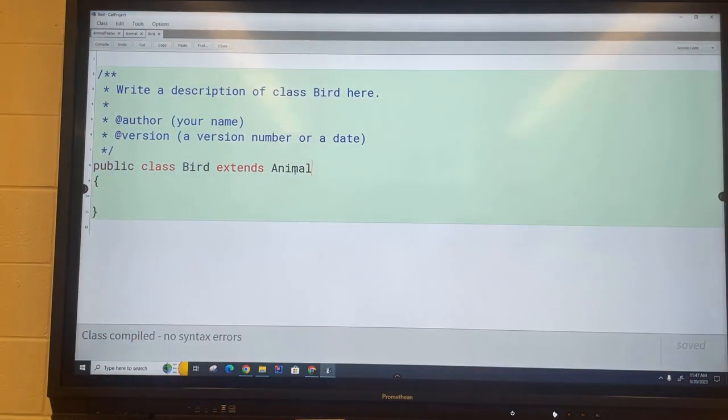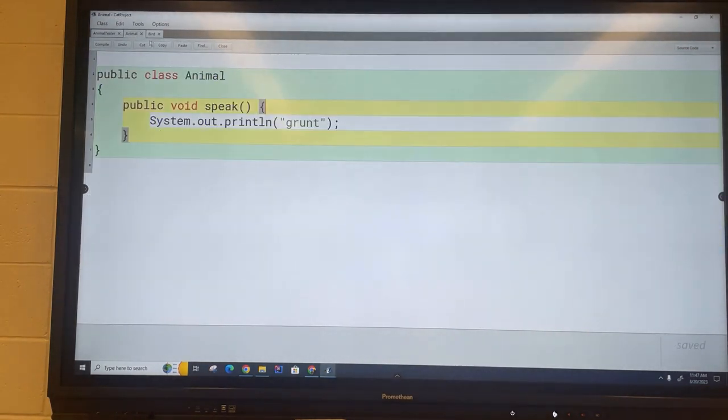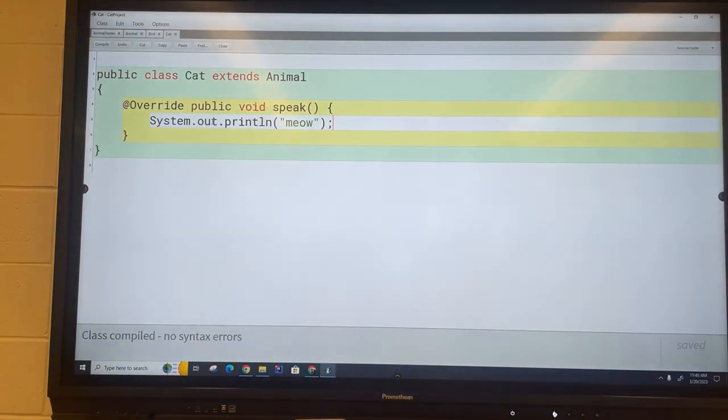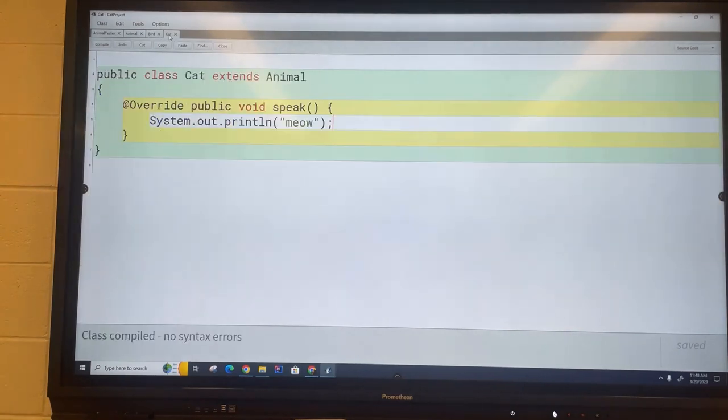So I'm going to override it here in this cat method. So now I've got all of my classes. I've got my generic speak here, I've got the bird which says chirp and I've got the cat that says meow.